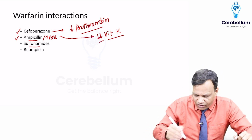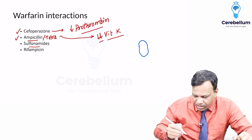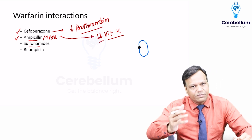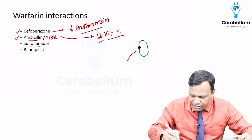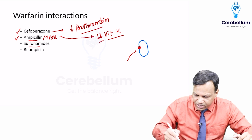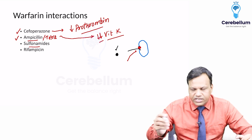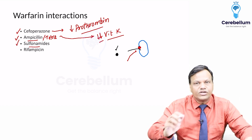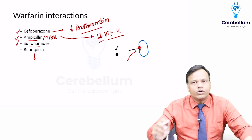Third is sulfonamides. Warfarin has high plasma protein binding — it binds to albumin. Sulfonamides also have high plasma protein binding and compete for the same binding sites. When sulfonamide binds, warfarin is displaced and becomes free. When free warfarin increases, it can lead to bleeding. So sulfonamides can also cause bleeding when used with warfarin.